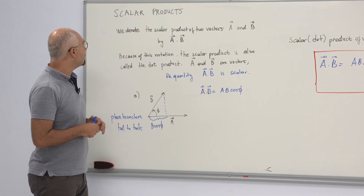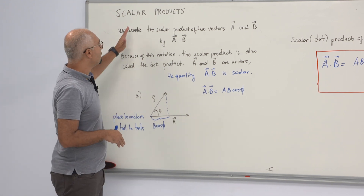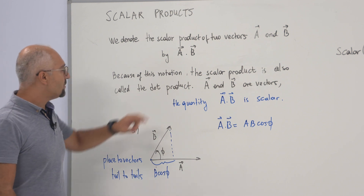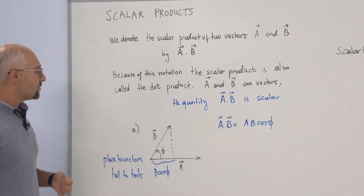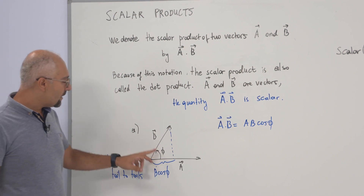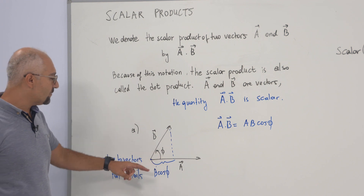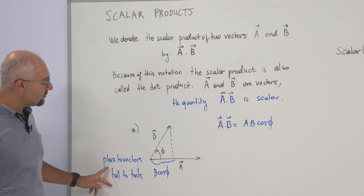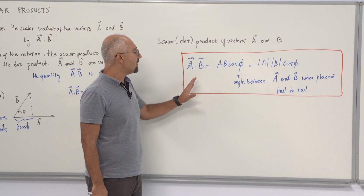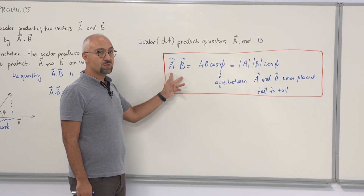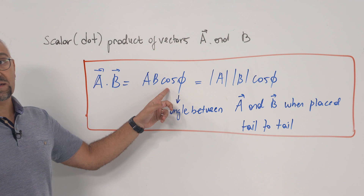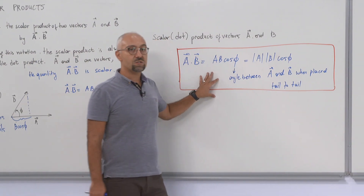In the final part of this chapter, we are going to discuss the product of vectors. Starting with scalar products: we denote the scalar product of two vectors A and B as A dot B, also called the dot product. To compute it, take vectors B and A with angle phi between them, place them tail to tail, and get the projection of B onto A. The scalar product is defined as the magnitude of A times the magnitude of B times cosine phi. The result is a scalar.